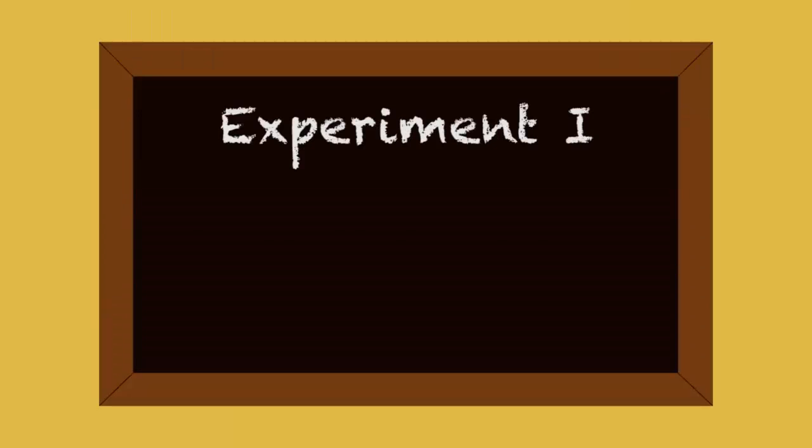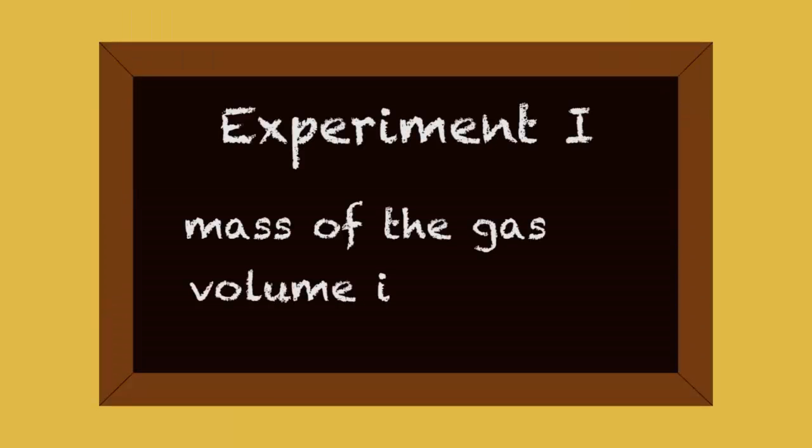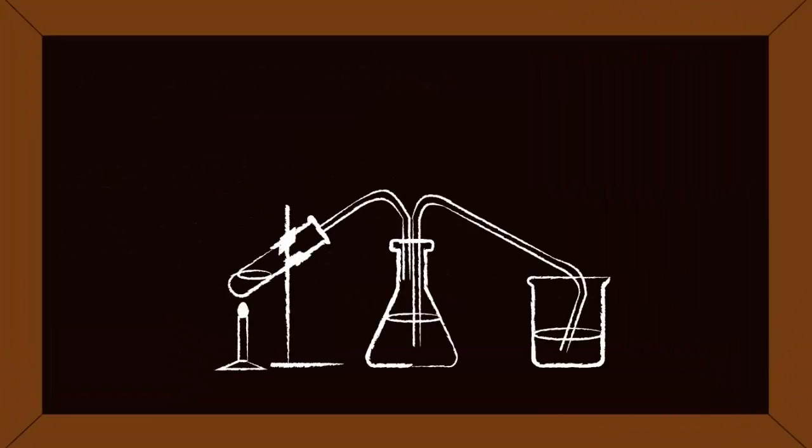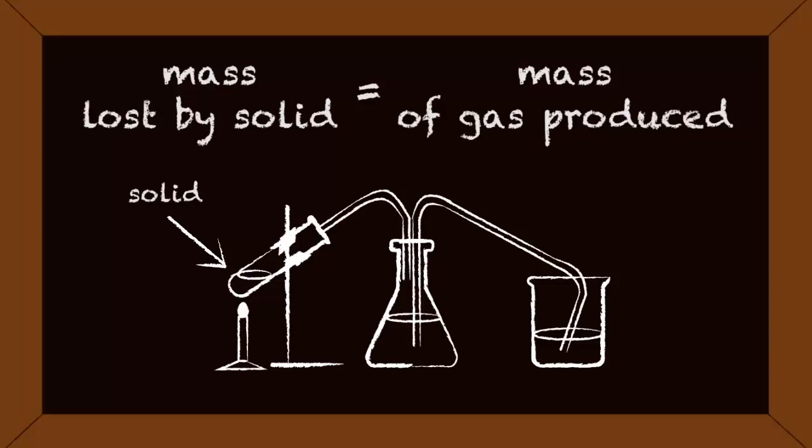In the first experiment you can measure the mass of the gas and the volume it produces. From this reaction setup you can measure the mass lost by the solid when it is heated. The mass lost by the solid in the test tube is the same as the mass of the gas produced.